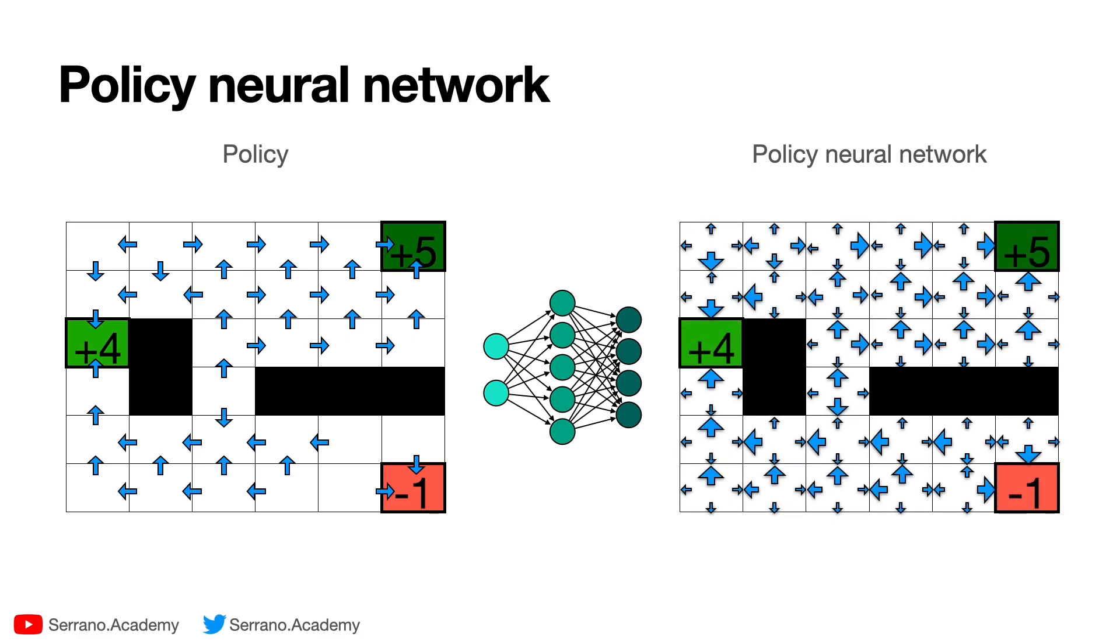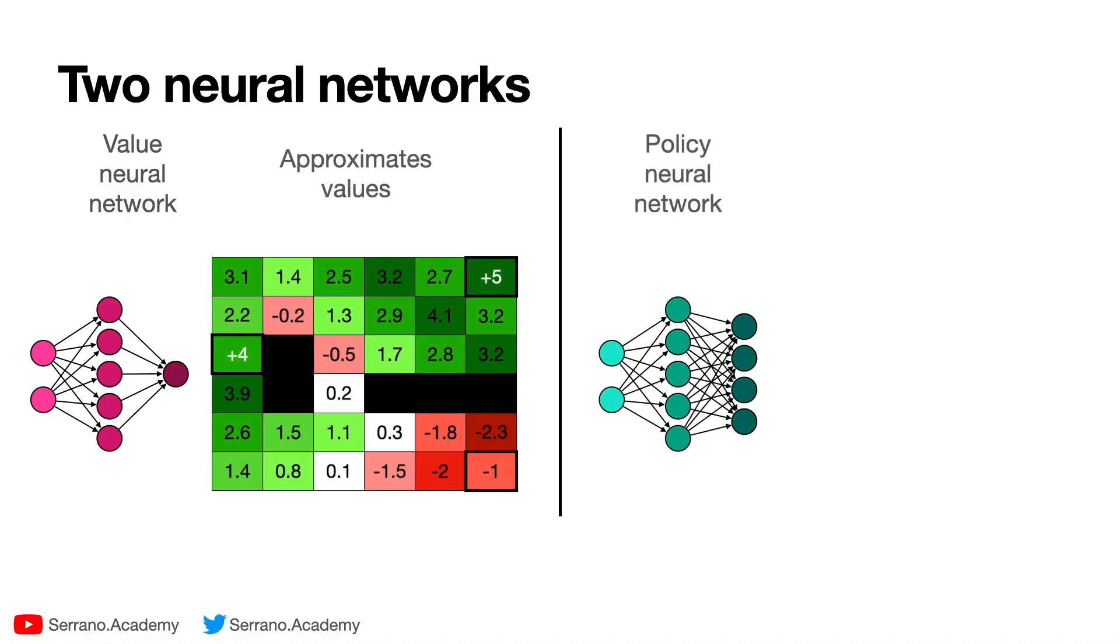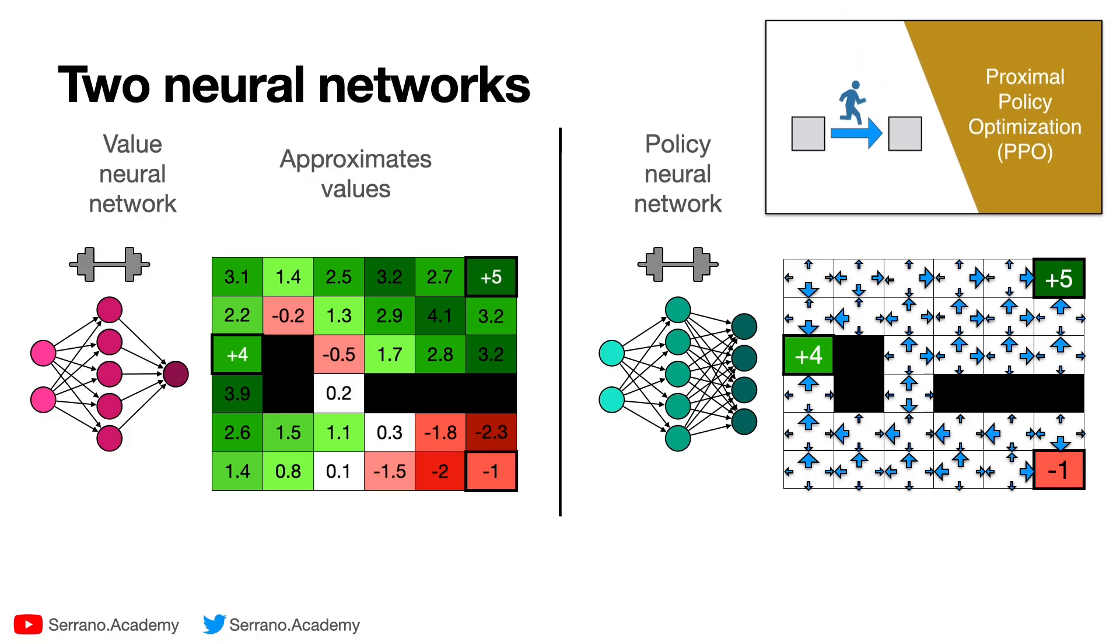Notice that the policy on the right is stochastic, meaning for each state I have four probabilities: one to go up, to the left, down, and to the right. The larger the arrow, the larger the probability that we're going to move there. But at every state we're going to flip a coin with these probabilities and move in the state that comes out. So in summary, we have the value neural network which approximates the values and the policy neural network which approximates the policy. The idea of PPO is that we can train these two at the same time. If you need a refresher on how to do this, check out the video on PPO that I have in the comments.